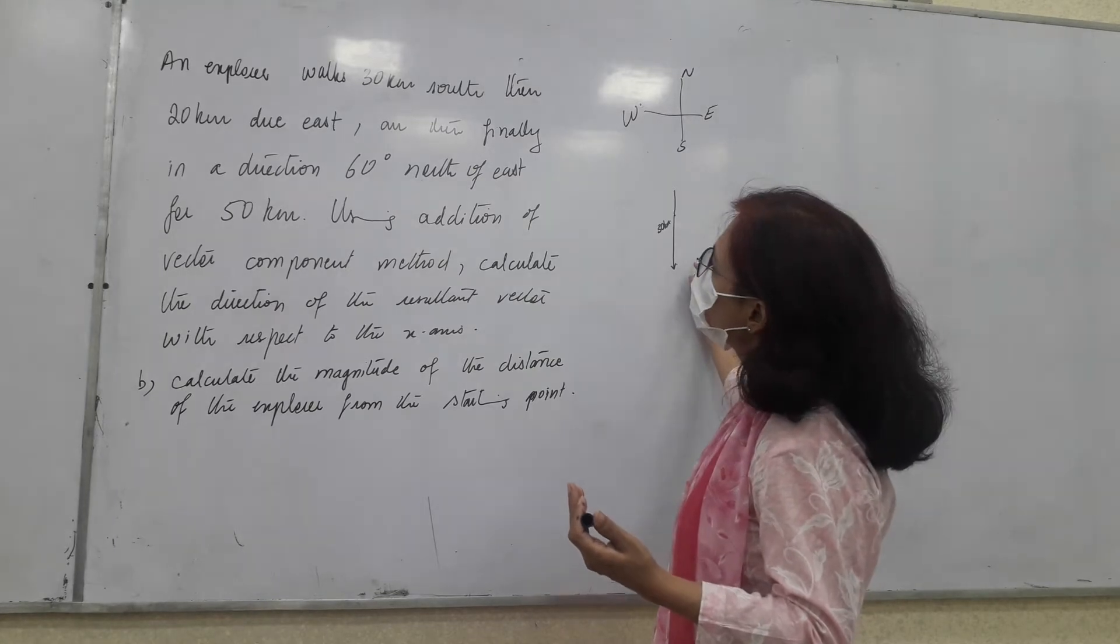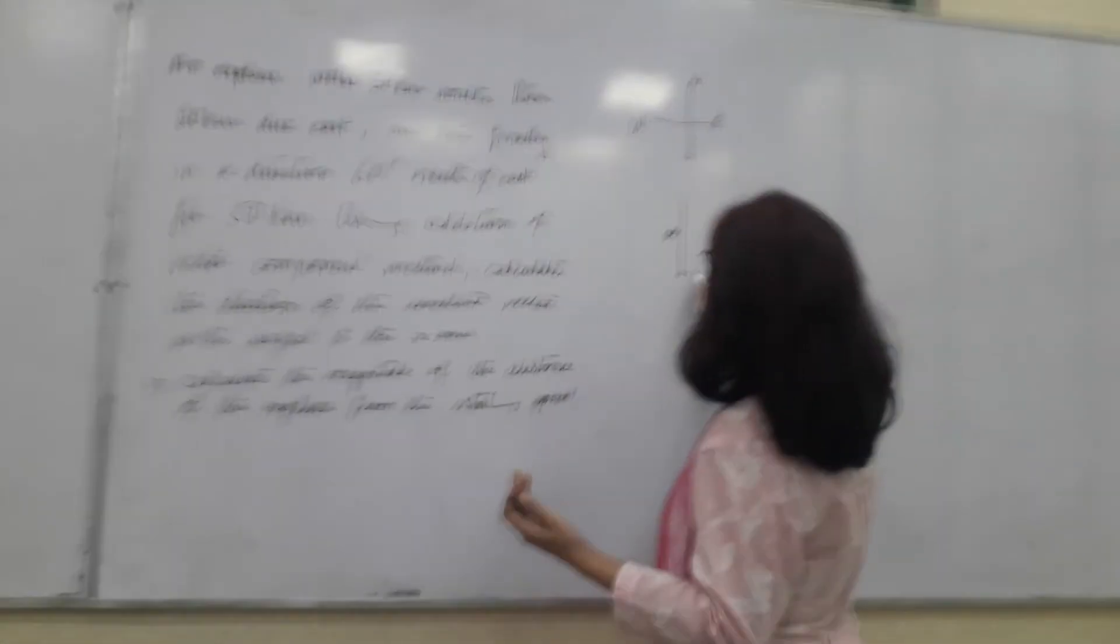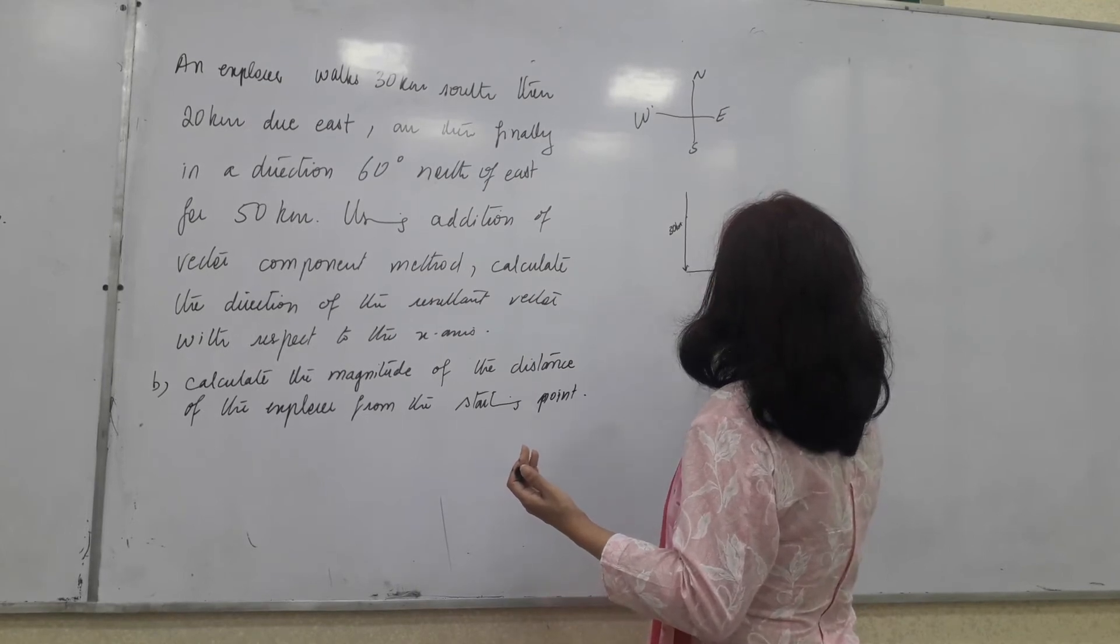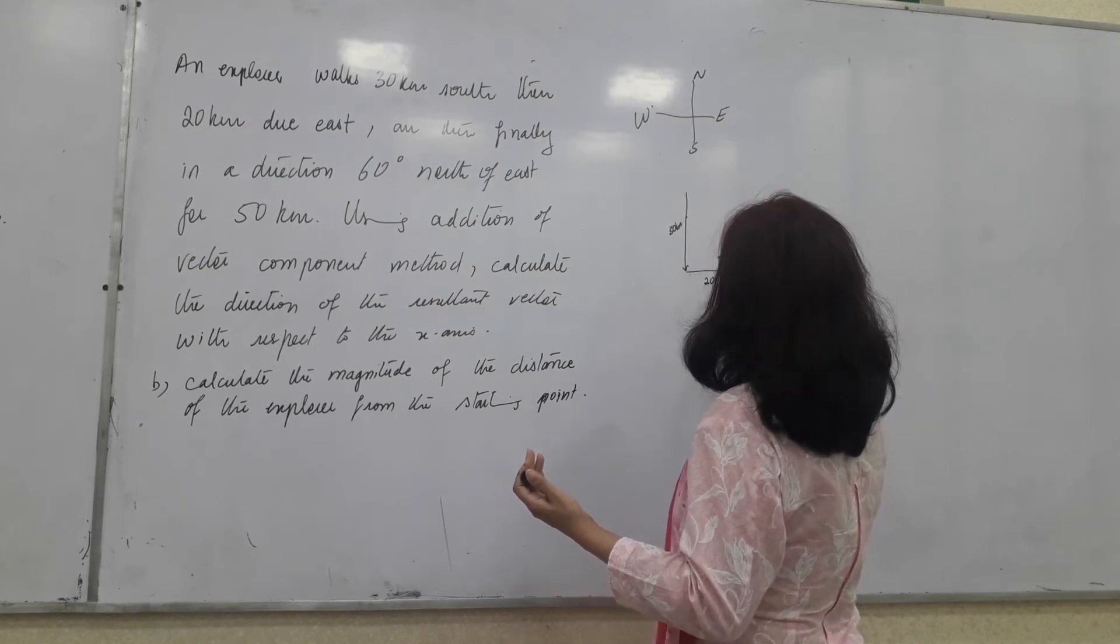Next is 20 kilometers east. Again, using the same rough scale we have, it is going to be like this, 20 kilometers east. And then?